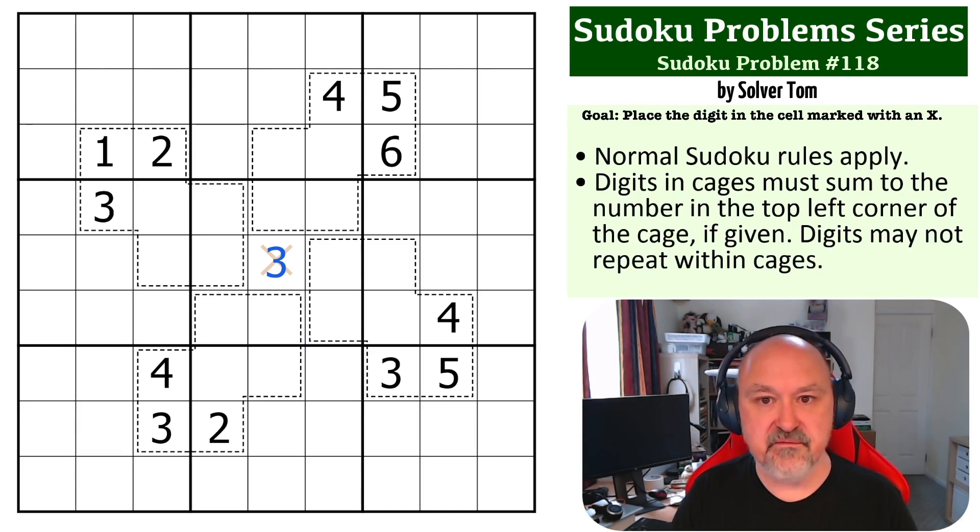So I felt this was a very good problem to highlight the fact that this 3 in box 7 actually forces 3 out of those two cells, and that's an important thing to know. And same with this 3 in box 9, knocking 3 out of those. Very important.